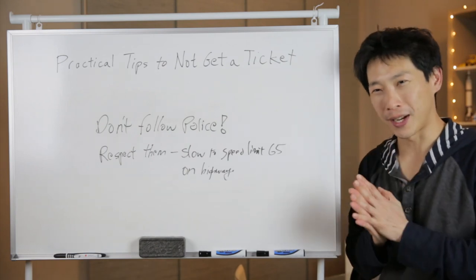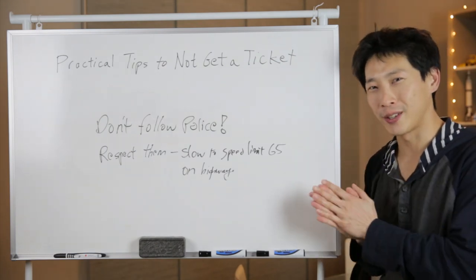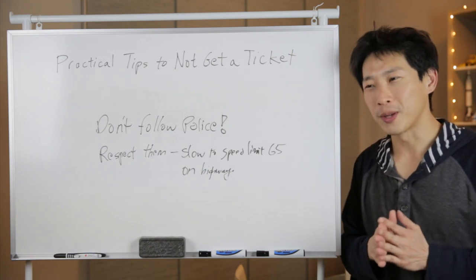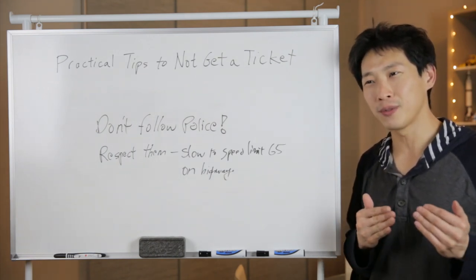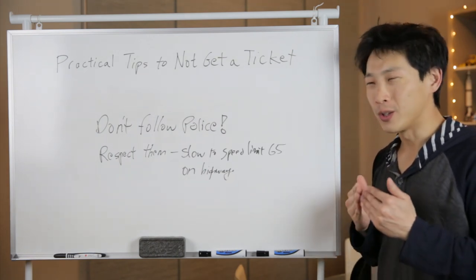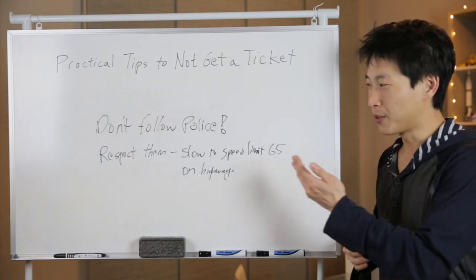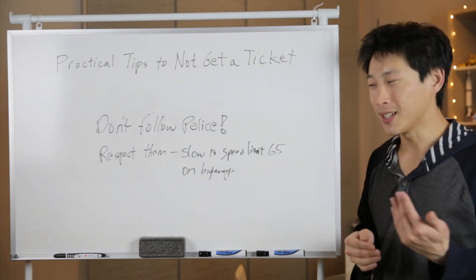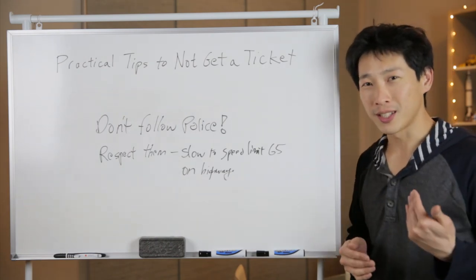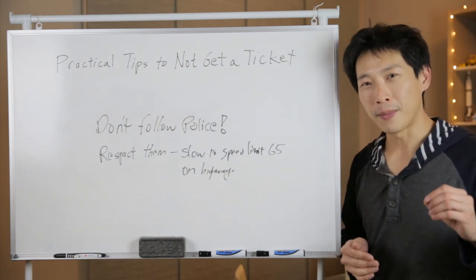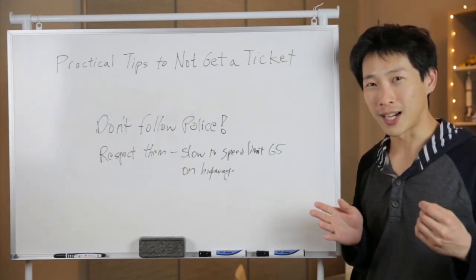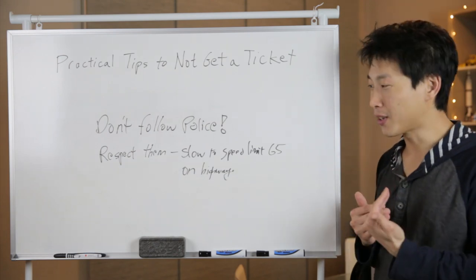The other point is to respect them and not pretend they're not there. Once you notice them, it's okay to react as if you know they're there. You respect them, you see them there. If you're on the highway and you are going 70, it's okay to slow down to 65. But don't jam on the brakes to slow down to 65. You can just let off the gas and let it trickle down to 65.